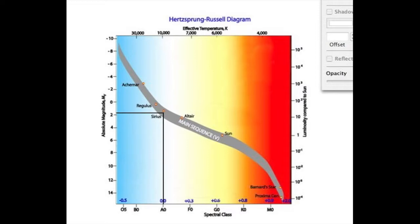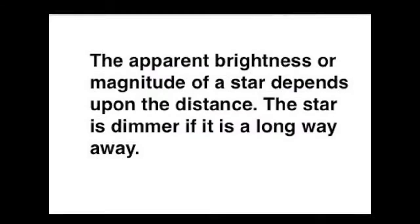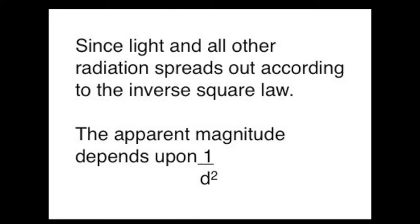By comparing this absolute magnitude with what we actually see, the apparent magnitude, we can make a calculation of the distance of Sirius from Earth. The brightness of a star depends upon distance according to the inverse square law. The apparent brightness is proportional to 1 over d squared.